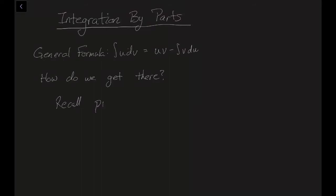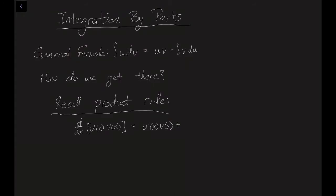To do that, let's remember what the product rule says. The product rule says if I take two functions, U of X and V of X, and I multiply them together and take its derivative, I get U prime of X times V of X plus U of X times V prime of X.